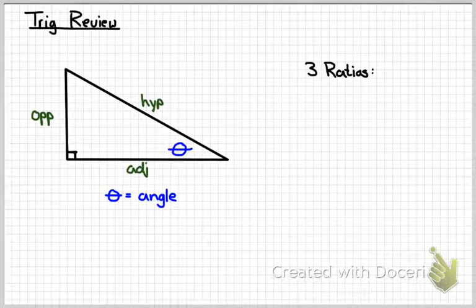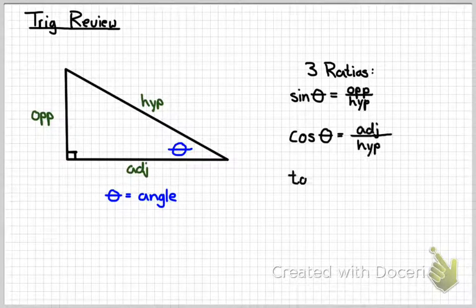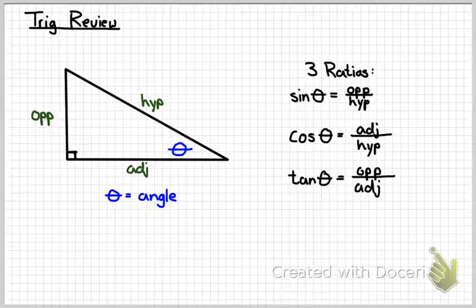From those three names, we can define three ratios. The sine of an angle is equal to the opposite over hypotenuse. Cosine of an angle is equal to adjacent over hypotenuse. The tangent of an angle is equal to the opposite side over the adjacent side.